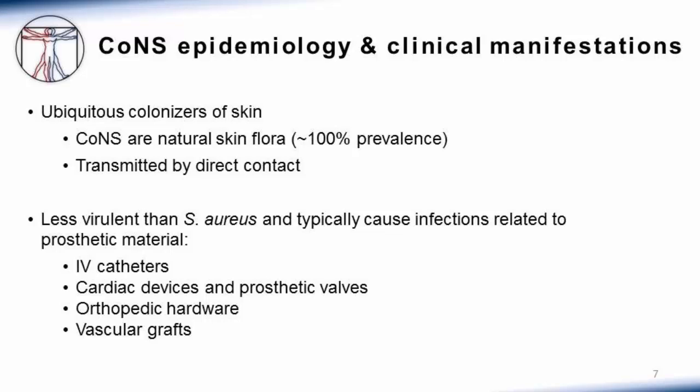Instead, you'll see these infections in association with intravenous catheters, cardiac devices and prosthetic valves, orthopedic hardware, or vascular grafts. The concept is that where there is plastic, metal, or prosthetic material in your patient, coagulase negative staph may latch on and subsequently cause infection.